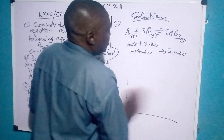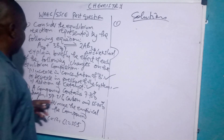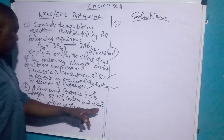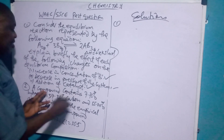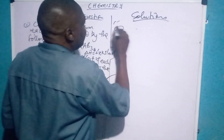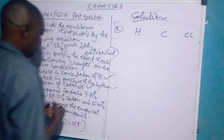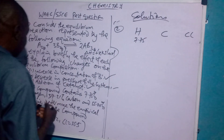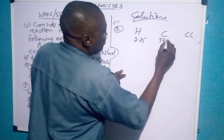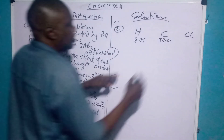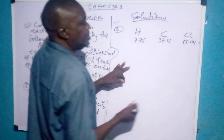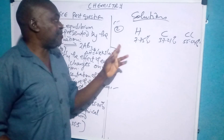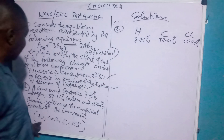Now let's go to the empirical formula calculation. The compound contains 7.75% hydrogen, 37.21% carbon, and 55.04% chlorine. Determine the empirical formula of the compound. We write out: hydrogen = 7.75%, carbon = 37.21%, chlorine = 55.04%. All values are in percentage. There are three basic steps to follow. First, divide each of them by the atomic mass.